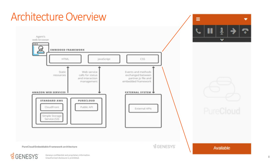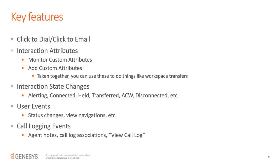Looking at a high-level architecture overview of the Embeddable Framework: all of our static resources and API implementations are stored as JavaScript files hosted inside AWS, communicating back to the PureCloud platform. Everything you see inside that client is managed and developed by Genesys — we take responsibility for that section and provide an interface layer around it that gives you notifications and a handful of JavaScript methods you can use to create deep integration to your external application.